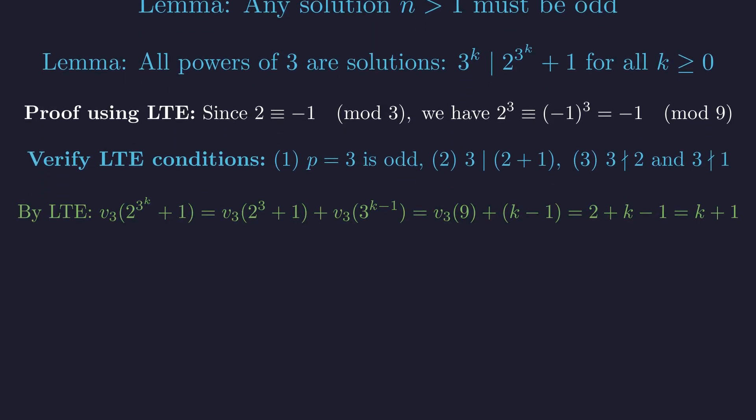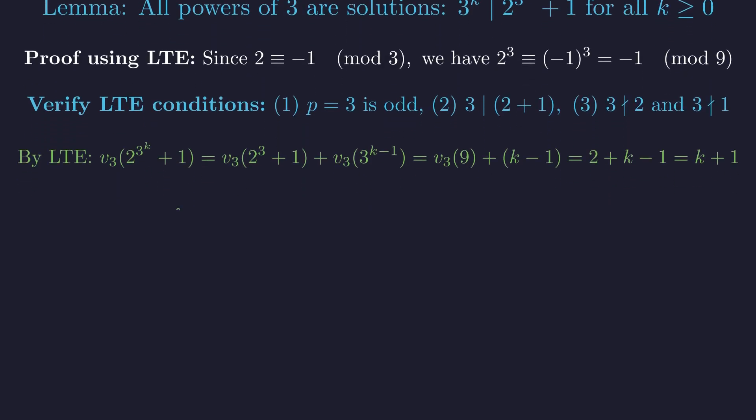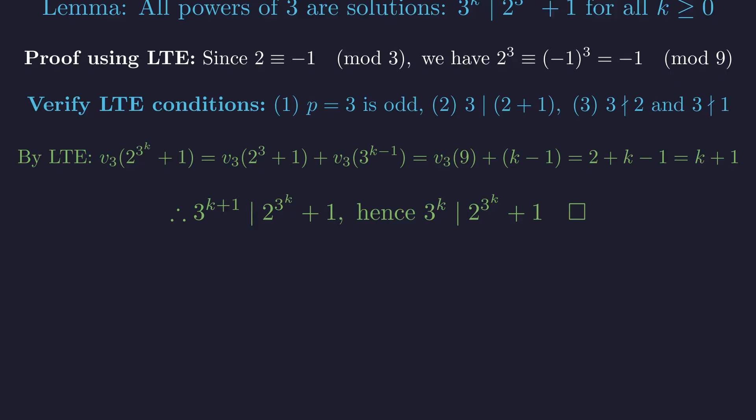By the lifting the exponent lemma, the 3-adic valuation of 2 to the 3 to the k plus 1 equals the valuation of 2 cubed plus 1 plus k minus 1. This gives us exactly k plus 1. Therefore, 3 to the k plus 1 divides the expression, which immediately implies 3 to the k divides it as well.